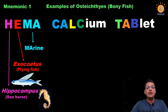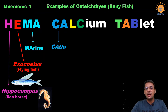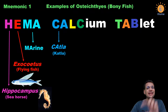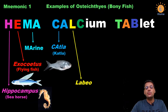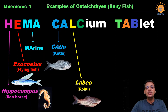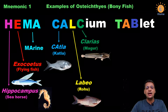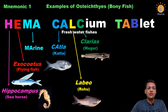The first group, marine fishes, can be learned by the word 'Hema' — Hippocampus, Exocoetus, and marine. Next is 'Calcium': Ca reminds us of Catla. L stands for Labeo, that is Rohu — Rohu is the common name, Labeo is the scientific name. C is for Clarias, or Magur. So Catla, Labeo, and Clarias all belong to freshwater fishes.